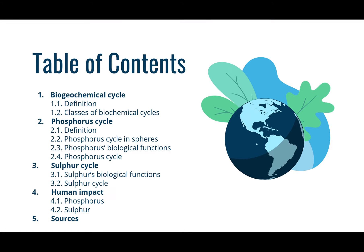For the biogeochemical cycle I'll give you a definition and the classes of biochemical cycles. For the phosphorus cycle I'll also discuss the specific phosphorus cycle, its biological functions, and provide diagrams illustrating what the phosphorus cycle is there for. Then we'll move on to the sulfur cycle in the same manner, and differentiate between phosphorus and sulfur regarding human impact. At the end I'll show my sources so feel free to screenshot and use them as needed.